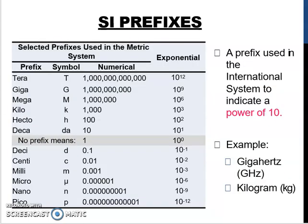Next is SI prefixes. Prefixes is a letter that we put in front of another letter. A prefix in the international system indicates a power of 10. In the table here there are some selected prefixes used in the metric system: tera, giga, mega, kilo, hectare, deka, and then the base with no prefix which means 10 to the power of 0, then deci, centi, milli, micro, nano, pico, and femto. Tera has the exponential value of 10 to the power of 12, giga is 10 to the power of 9, mega is 10 to the power of 6, and so on. You need to memorize these.